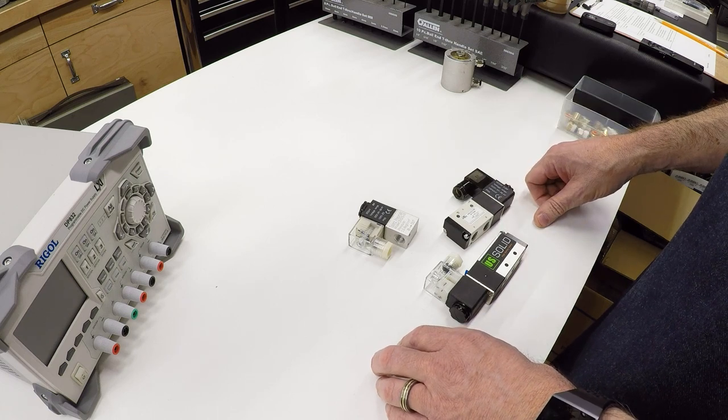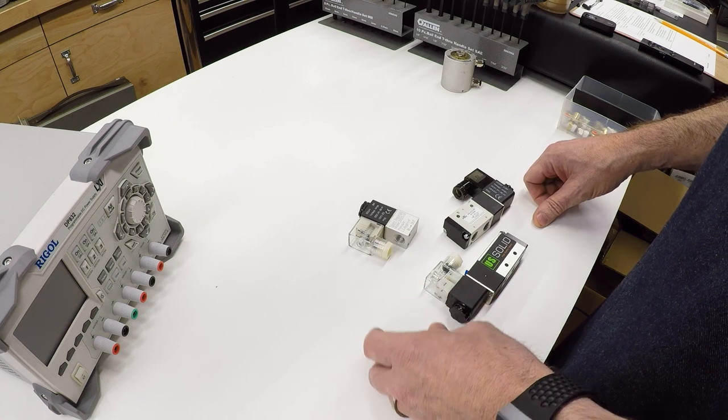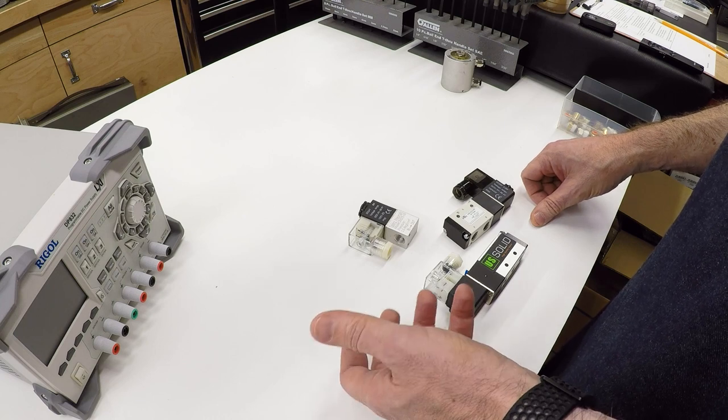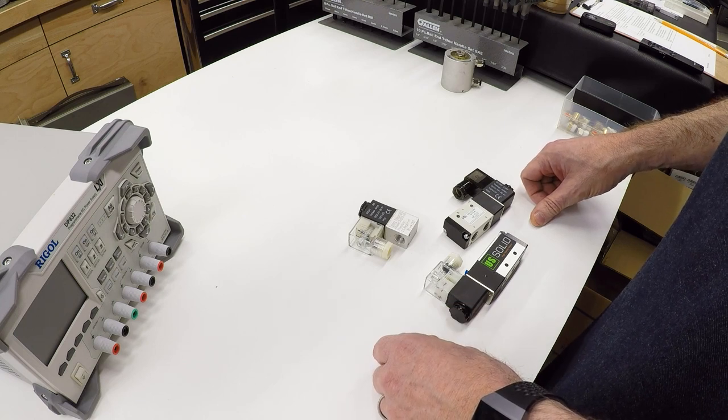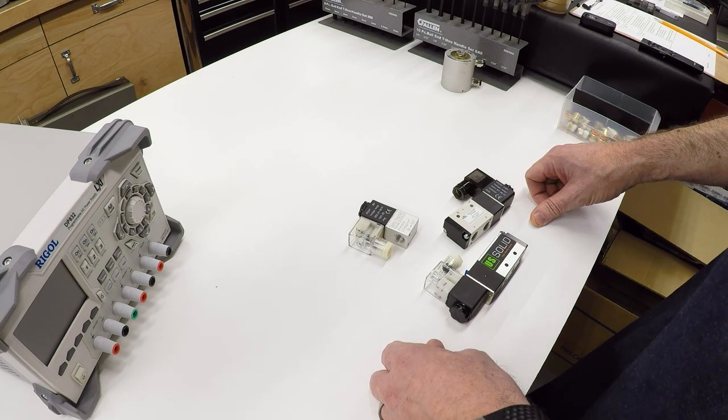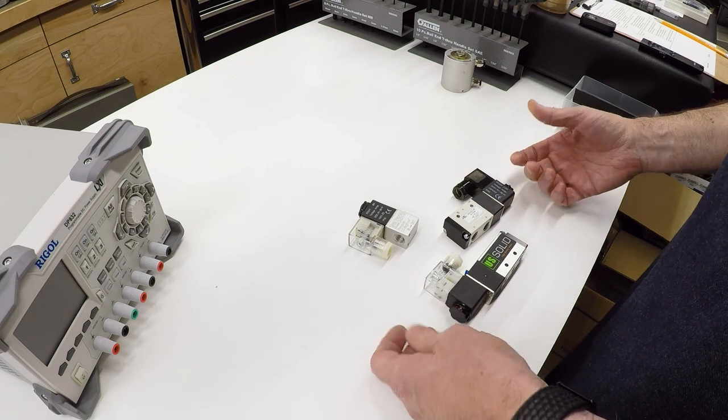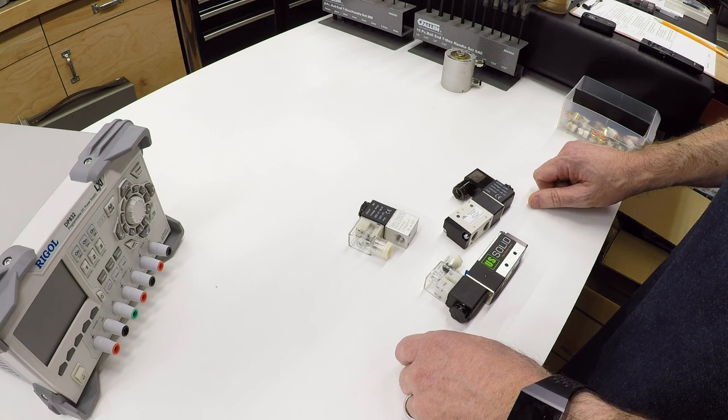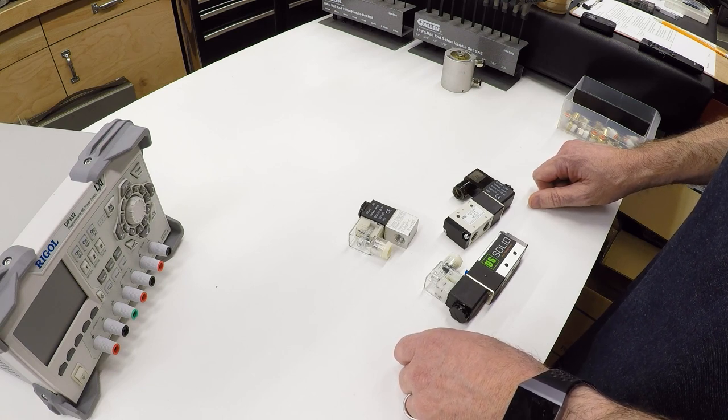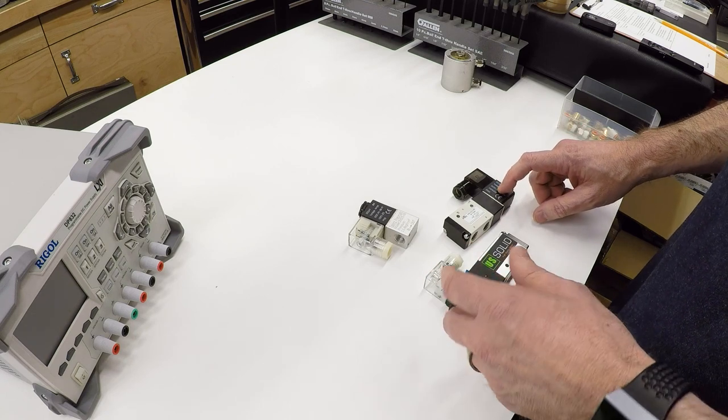I'm also going to put a fog buster on the machine and I'll want to be able to switch the compressed air for that on and off automatically under control of the CNC program. For all three of those, what I need is an electrically controlled valve. These are commonly referred to as solenoid valves. Apparently people on the internet disagree about how that should be pronounced.